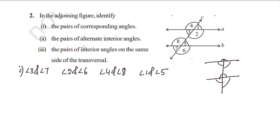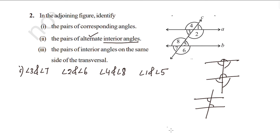Now we look at the alternate angles. The pairs of alternate angles are: angle 3 and angle 5, and angle 2 and angle 8.